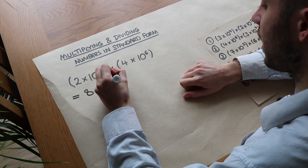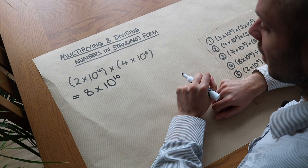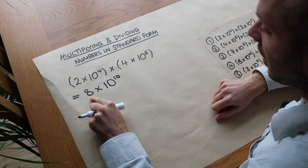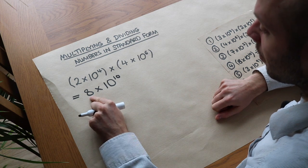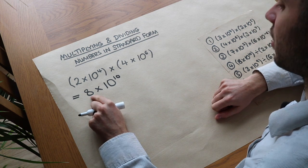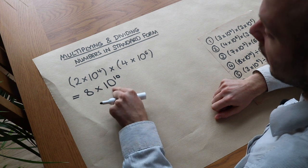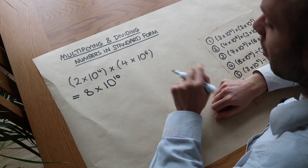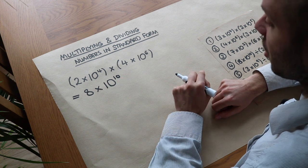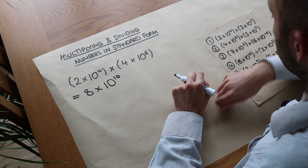So it's 10 to the power of 10. Now let's check — is this in standard form? Yes it is, because that number is between 1 and 10 excluding 10 itself, and that is 10 to the power of an integer, so that is in standard form.